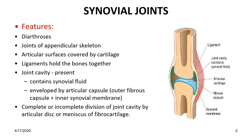In this session we will consider the features of the synovial joints. The other name for synovial joints is diarthrosis. Diarthrosis means freely movable joints, meaning a wide range of movement is possible. Most of the joints of the appendicular skeleton are synovial joints.